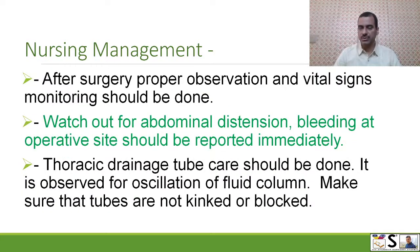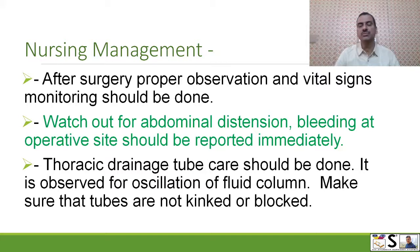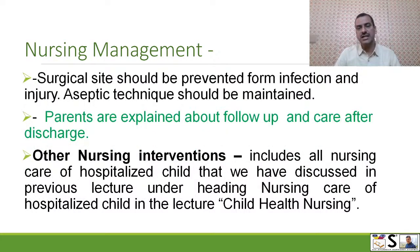After surgery, proper observation and postoperative nursing care is given. Vital signs are monitored and recorded. Watch out for abdominal distension. Bleeding at the operative site should be reported immediately. Thoracic drainage tubes are normally in place, so thoracic tube care should be provided. We should observe the oscillation of the fluid column in the drainage tube and make sure the tubes are not kinked or blocked. The surgical site should be prevented from infection and injury, and aseptic technique should be maintained while providing care.